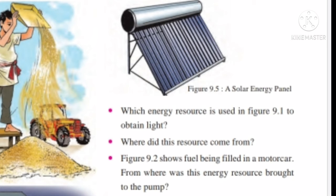Now let us try to answer the questions. First: which energy resource is used in figure 9.1 to obtain light from the lantern? Kerosene is used in the lantern as fuel, which helps it burn and give light. Kerosene is found under the land surface and below the ocean floor, and it takes many years to be formed under the ground.